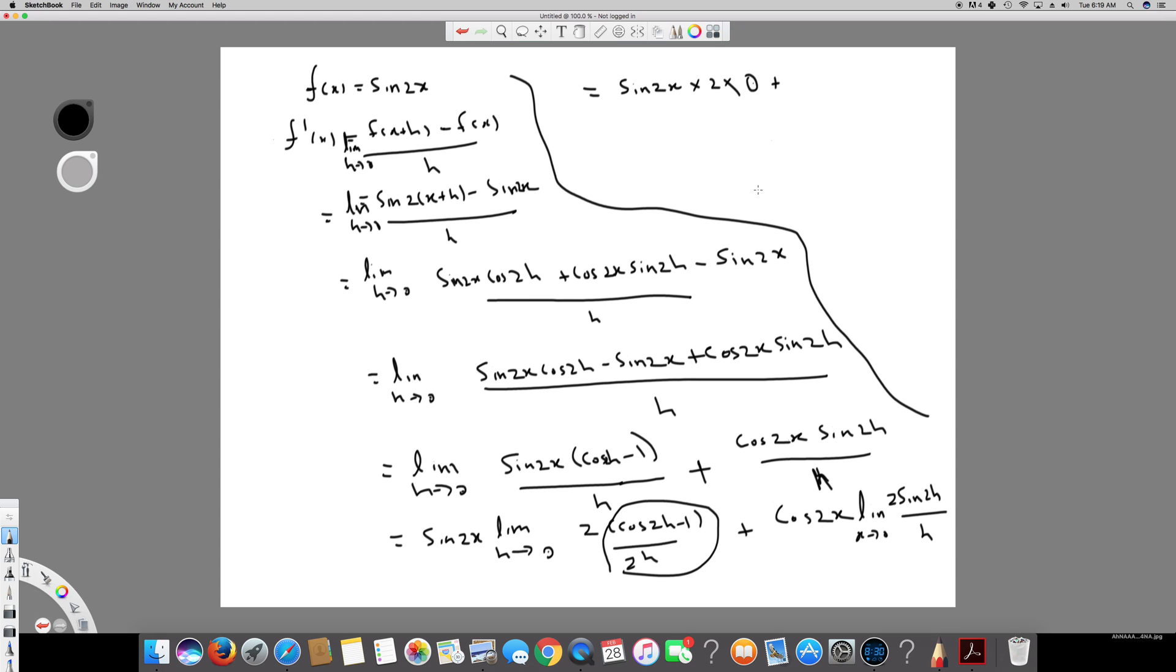And plus, cos 2x times 2. And this whole thing is, and bottom I'm multiplying bottom and top by 2. So this whole thing is equal to 1. So this is also a general formula.